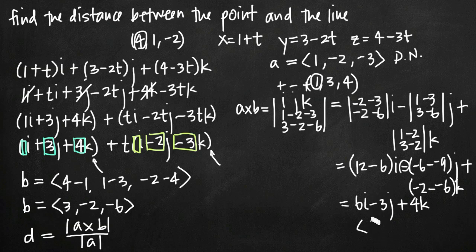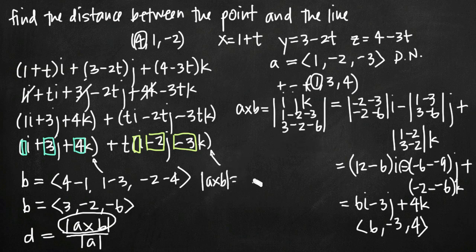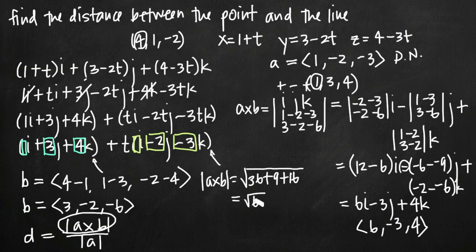The cross product vector has coefficients 6, negative 3, positive 4. Now we need the magnitude of this cross product. We take the square root of the sum of the squares of each component: 6 squared is 36, negative 3 squared is 9, and 4 squared is 16. The sum is 61, so the magnitude of the cross product is the square root of 61. This is our numerator in the distance formula.